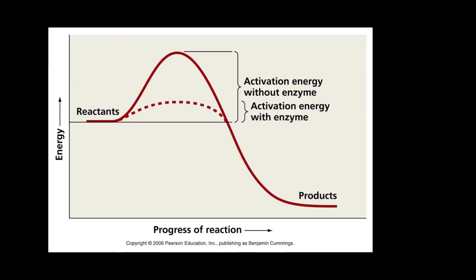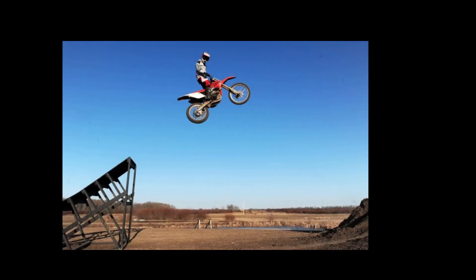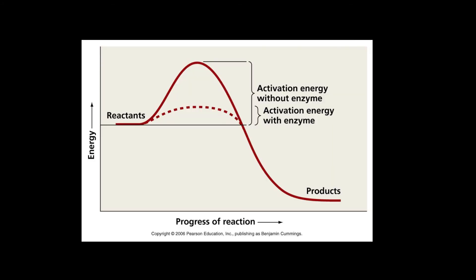So, how do enzymes actually increase the rate of a chemical reaction? They decrease something called the activation energy — the energy required to start a chemical reaction. A good way to visualize this is to think about someone going over a ramp on a bike or roller skates. They have to get up a certain speed to make it over the ramp, just as a chemical reaction has to have a certain amount of energy to proceed. Enzymes decrease that activation energy, and that's how they make a chemical reaction happen faster.